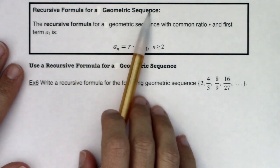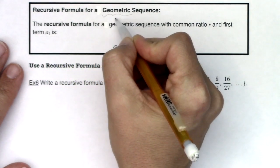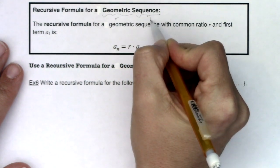So here's the recursive formula for a geometric sequence. Again, when you hear geometric, you're thinking r. When you hear sequence, you hear a list of numbers.